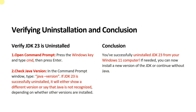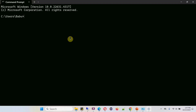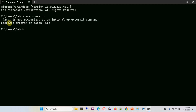To verify JDK23 is uninstalled, open Command Prompt and run the command java -version. If JDK23 is successfully uninstalled, it will either show a different version or say java is not recognized, depending on whether other versions are installed. Running this command, we got the output saying java is not recognized as an internal or external command, confirming JDK23 is successfully uninstalled from Windows 11.